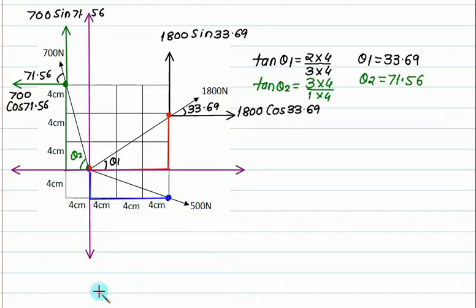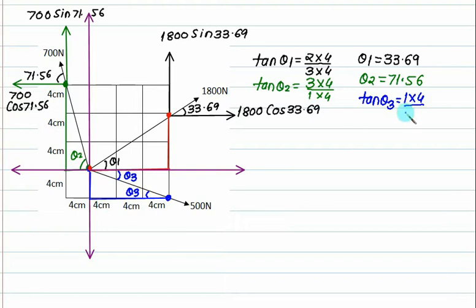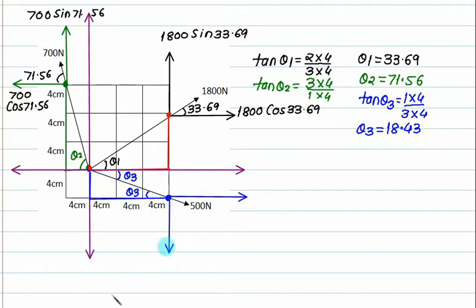You can take the triangle from any side. This angle is theta3, and the alternate angle is also theta3. So tan theta3 equals the vertical dimension 1 times 4 over horizontal dimension 3 times 4, giving 1 by 3, so theta3 is 18.43 degrees. Resolving the 500N force: one component is 500 cos 18.43 and the other is 500 sin 18.43.